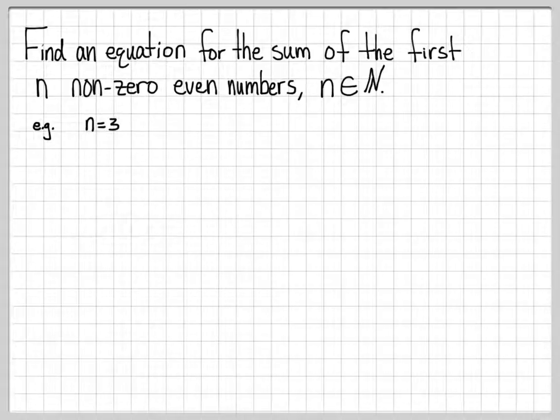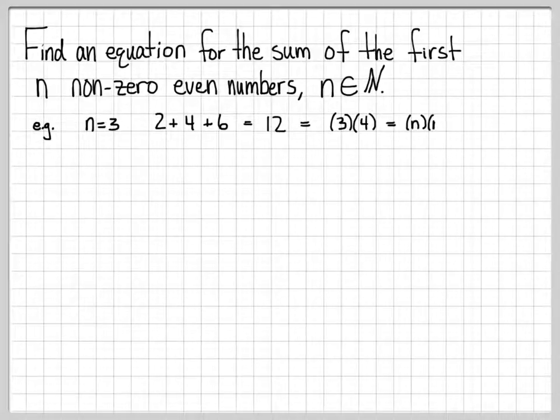Specifically, what if n was 3? The first 3 non-zero even numbers would be 2, 4, and 6. The sum would be 2 plus 4 plus 6. If I add this up, I would get 12. I can write 12 as 3 times 4, which has the form of n times n plus 1, because n in this case is equal to 3. That's one specific example of what we mean by the sum of the first n non-zero even numbers.